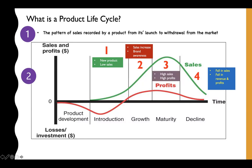In stage four, the product is declining — sales drop, demand for the product is dropping, and that will of course affect revenue and profits. So these are the four patterns of sales in the product life cycle, from the time the product is launched into the market to the point it is withdrawn or no longer exists.